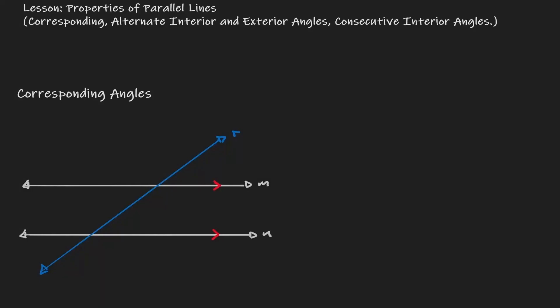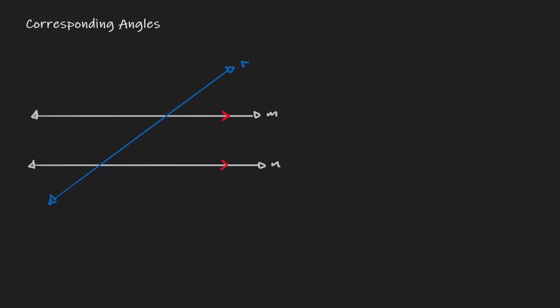Welcome. On this video, we will be defining properties of parallel lines. Every single angle that we'll be discussing today occurs because of the same situation: we have two parallel lines, which in this case are lines M and N. Notice that they have the symbol for parallel lines — those red arrows — implying that we have two parallel lines intersecting with a transversal.